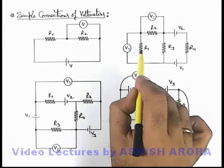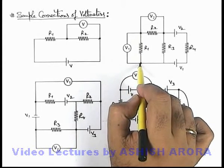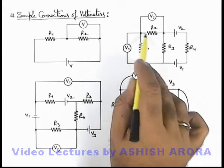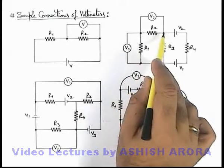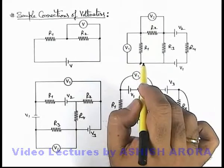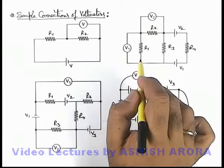So that current and multiplication with this resistance gives us the potential difference across R1, which is read by this voltmeter. Similarly, the product of current and this resistance is the potential difference across these terminals, which is read by the voltmeter V2, because V1 and V2 are connected in parallel across R1 and R2.